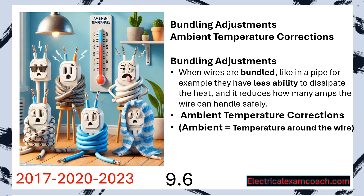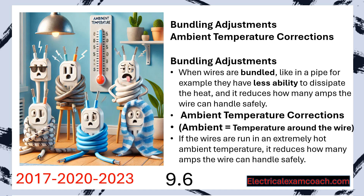Ambient temperature corrections work like this: if wires are run in an extremely hot ambient temperature, it reduces how many amps the wire can handle safely. Let's not forget the basic definition of ampacity — it's how many amps the wire can handle safely under its conditions of use.